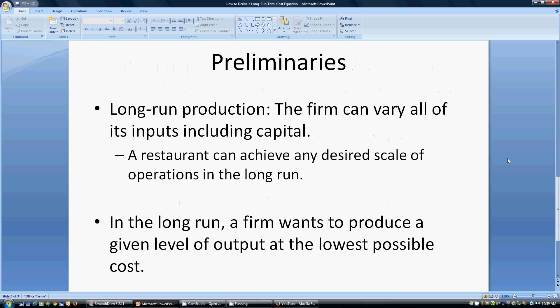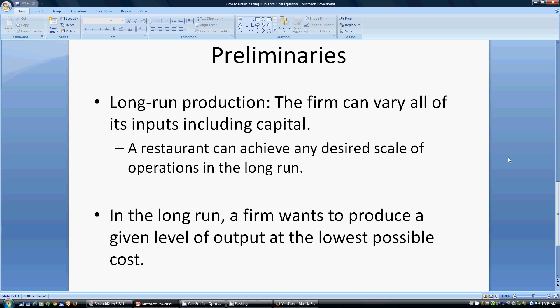As for the long-run, the long-run is a period of time in which the firm can vary all of its inputs, including capital. A restaurant can achieve any desired scale of operations that it desires in the long-run. It'll have enough time to expand its kitchen, knock down walls, add in 40 more tables, whatever the case may be. One key idea in the long-run is that a firm wants to produce a given level of output at its lowest possible cost. And that's what the long-run total cost function will tell us.